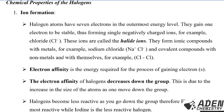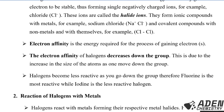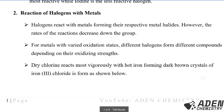The electron affinity of halogens decreases down the group, due to the increase in atomic size as one moves down the group. Halogens also become less reactive as one moves down the group; therefore, fluorine at the top is the most reactive halogen, while iodine at the bottom is the least reactive halogen.